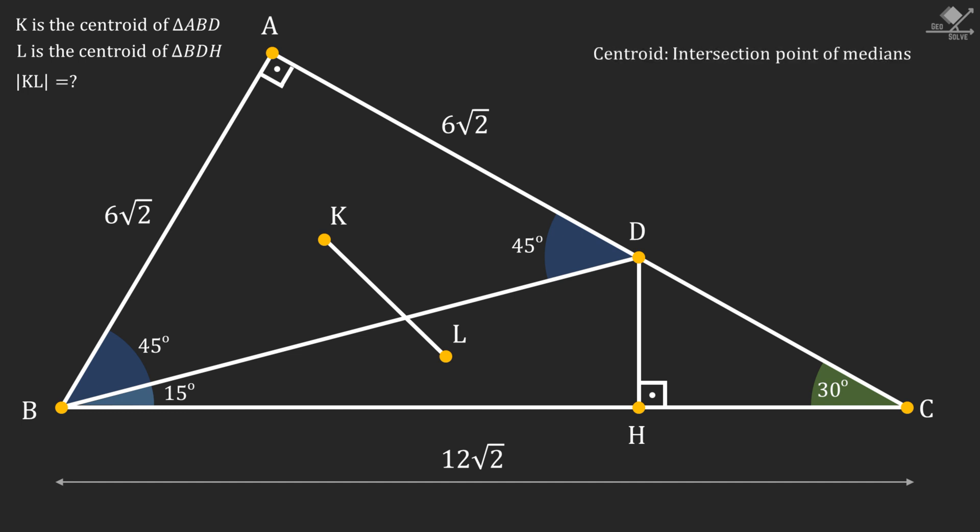Remember that centroid of a triangle is the intersection point of its medians. So, if we construct a median passing through point A and centroid K, it will divide the base of the triangle into two equal parts.